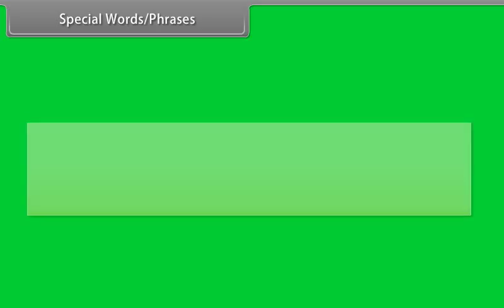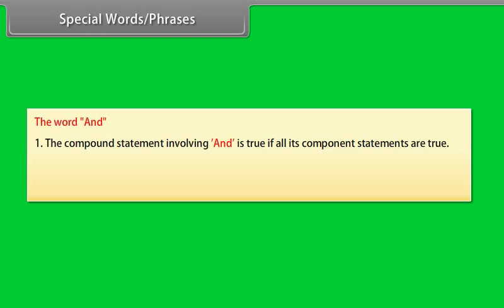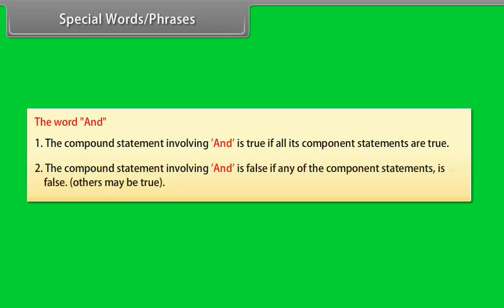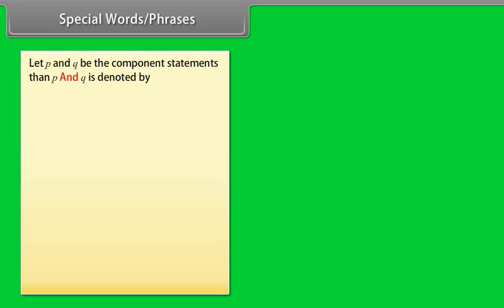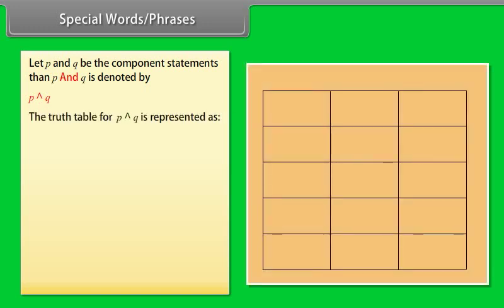Special words — The word AND: (1) A compound statement involving AND is true if all its component statements are true. (2) A compound statement involving AND is false if any of the component statements is false. Truth table for P AND Q: P true, Q true → P∧Q true; P true, Q false → P∧Q false; P false, Q true → P∧Q false; P false, Q false → P∧Q false.